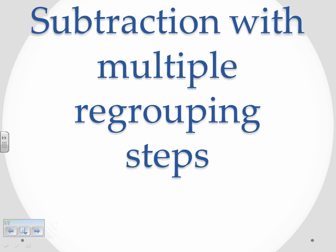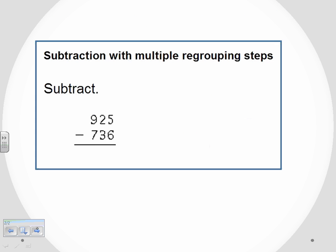The problem set we're taking a look at now is subtraction with multiple regrouping steps. So our example, we have to subtract 925 minus 736.